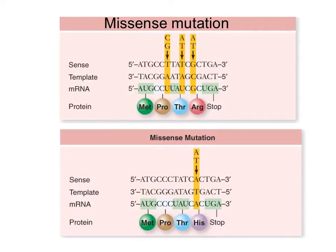On the other hand, a mutation can change the codon and the amino acid it codes for. For example, a C and G in the original DNA template is replaced by an A and a T. This changes the transcript: instead of CGC in the original mRNA, now we have CAC. Originally we were coding for the amino acid arginine; now we're coding for histidine, producing a different protein. This is called a missense mutation because it has changed the meaning of the codon.